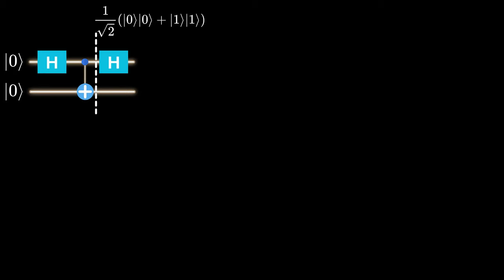We have seen that the state of the system so far is superposition of 0, 0 and 1, 1. Now, we apply Hadamard gate on the first qubit, which is the control qubit.